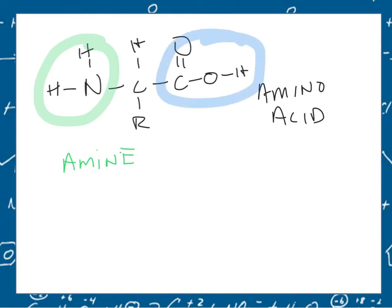This C double bonded to an O, single bonded to an O, and an H is the carboxylic acid. This is how we get the name amino acid, because we're composed of an amine and a carboxylic acid.